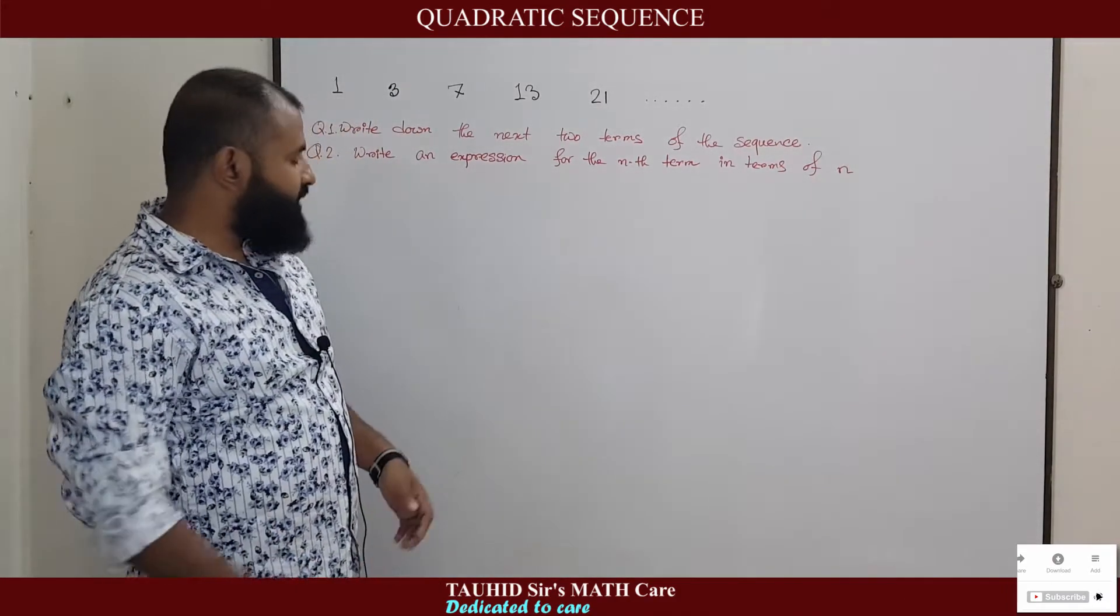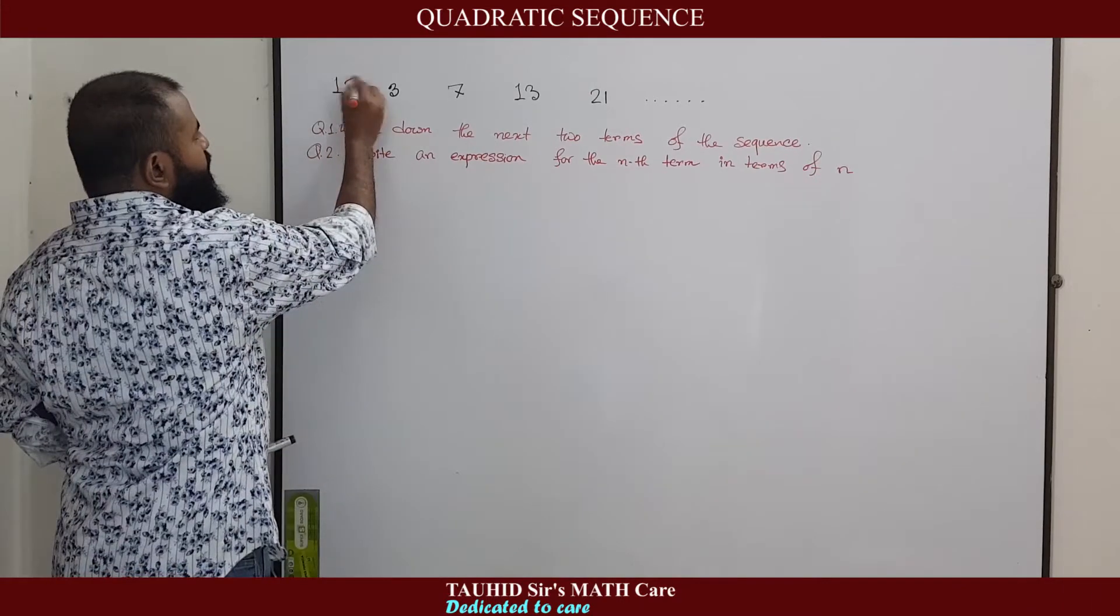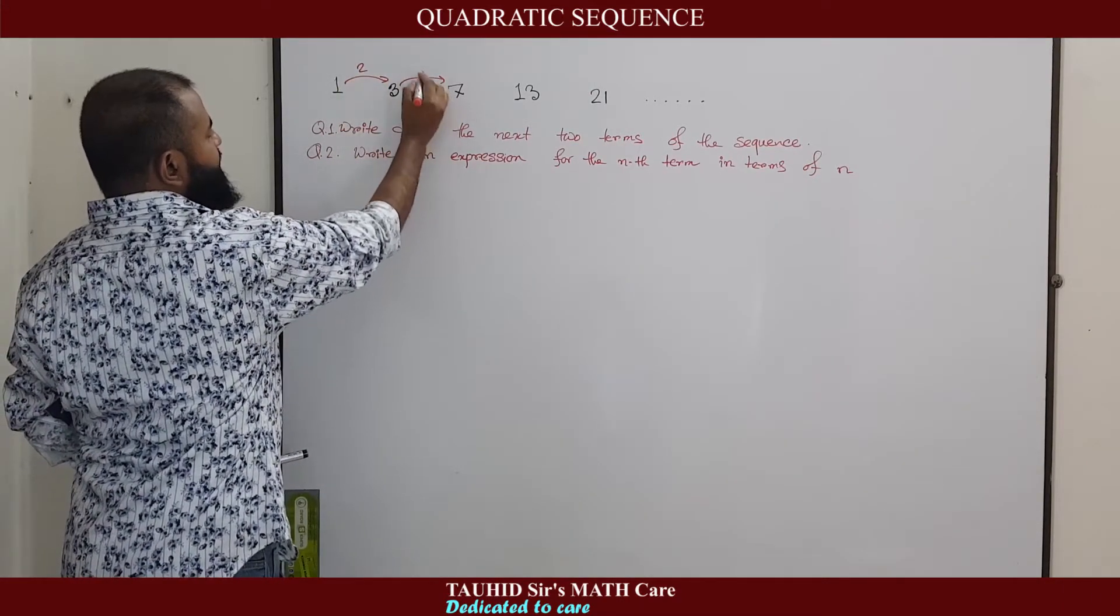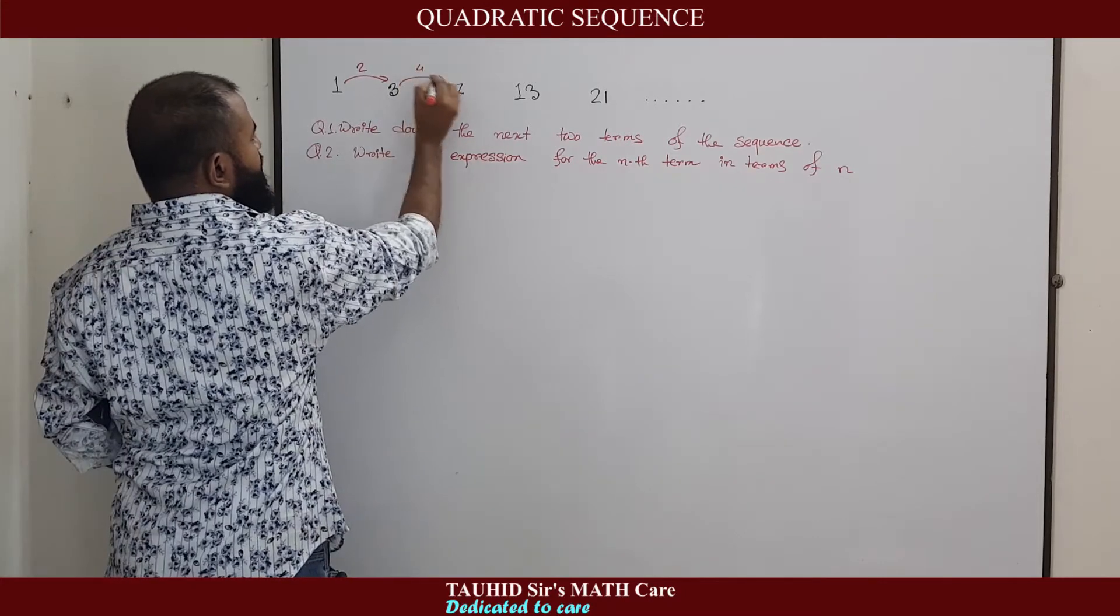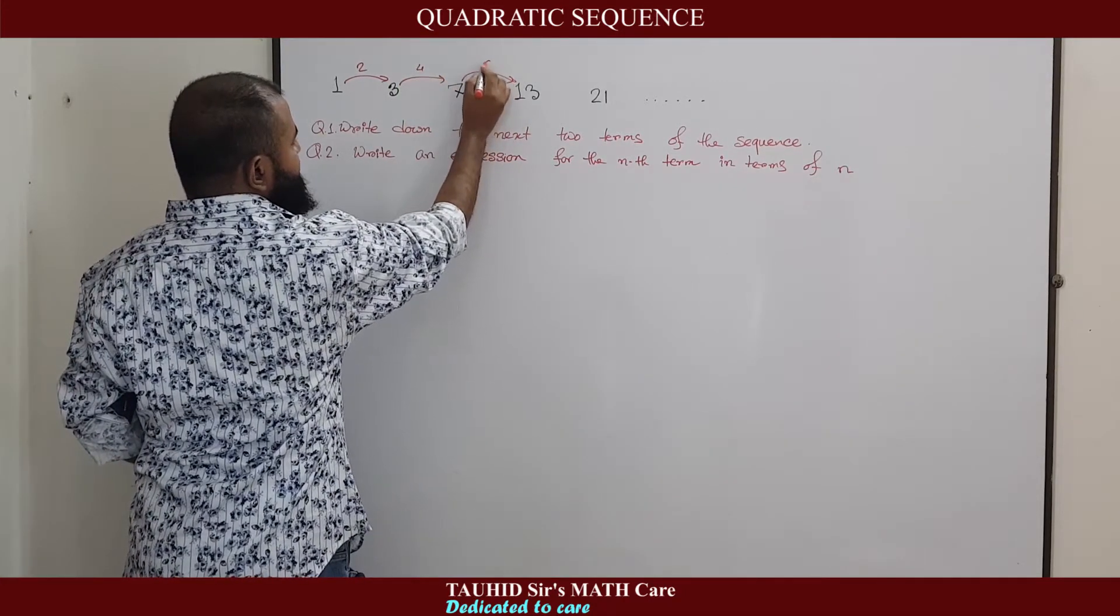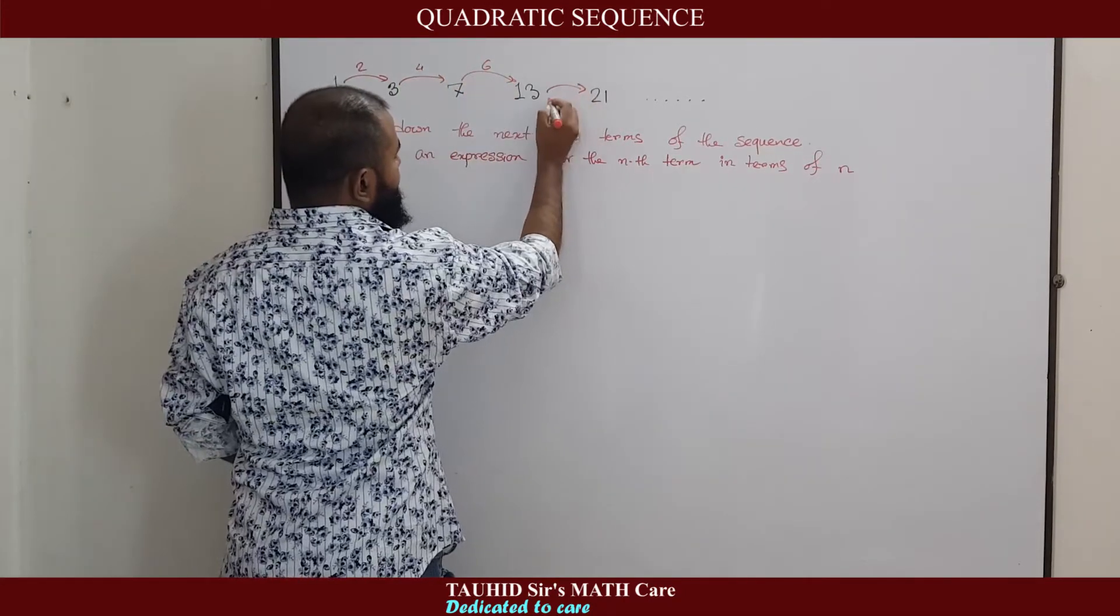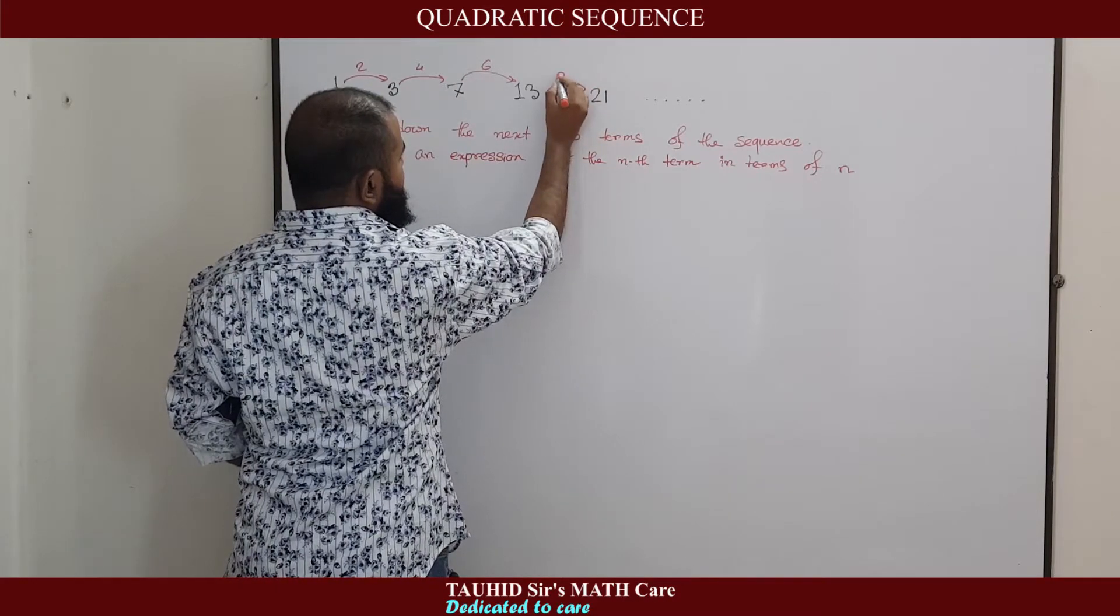So, how to solve this? Let us check something. 1 to 3, the difference is 2. 3 to 7, the difference is 4. 7 to 13, the difference is 6. 13 to 21, the difference is 8.